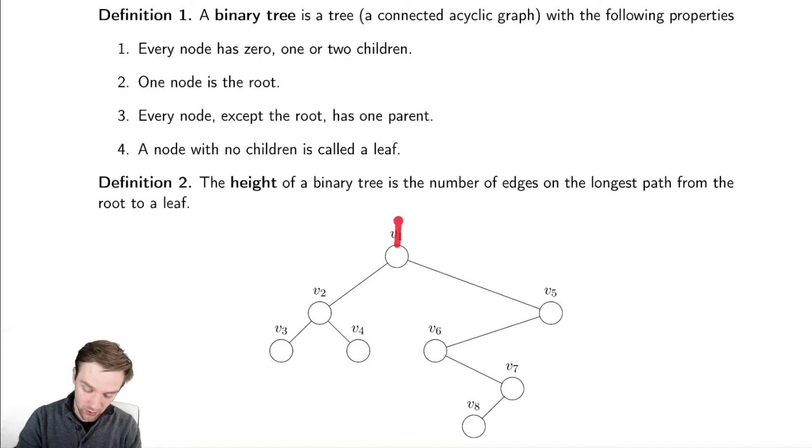The parent for the root node is going to be some null pointer that points up, and every node with no children, this node, this node, and this node, are all what we call leaf nodes.